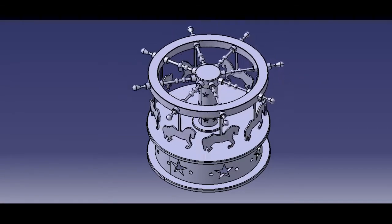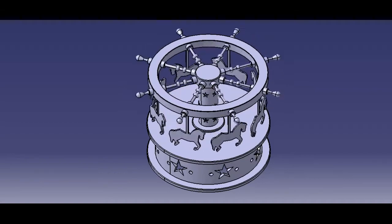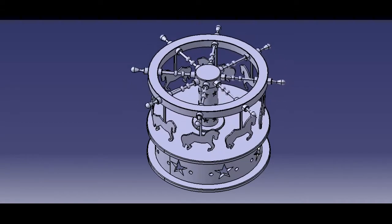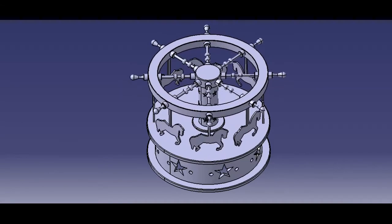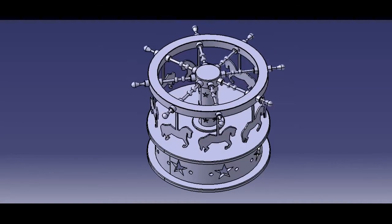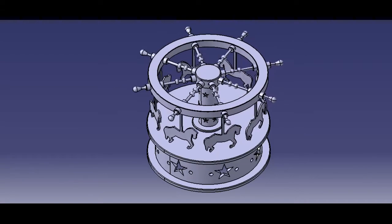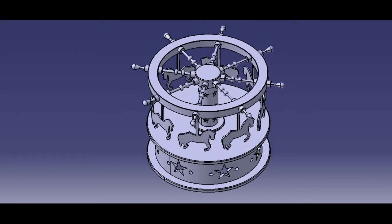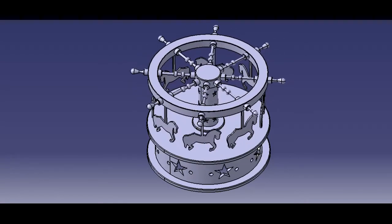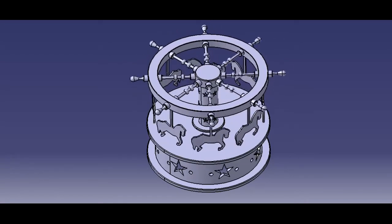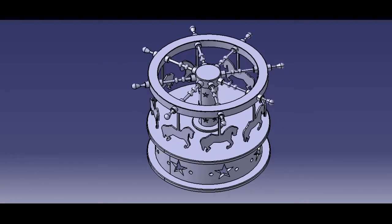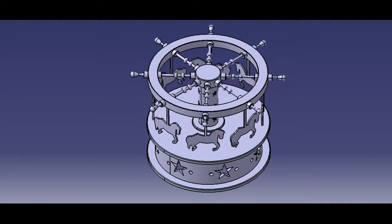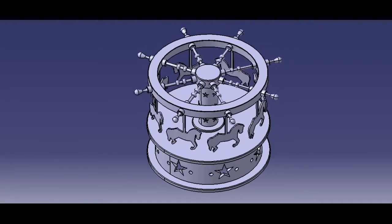This is the all-parts assembly. We will draw two parts of this toy carousel. This video contains the support part and the horse part.